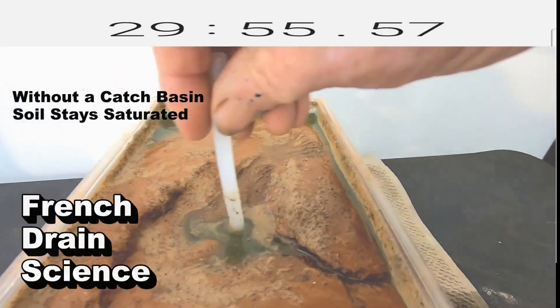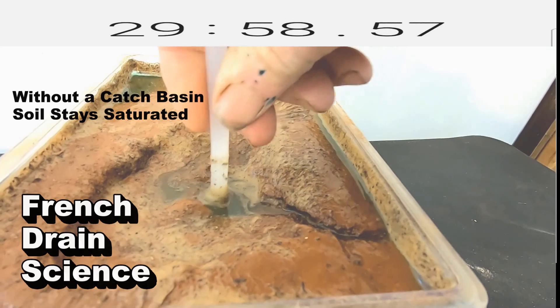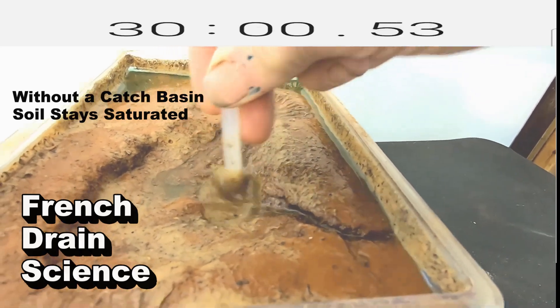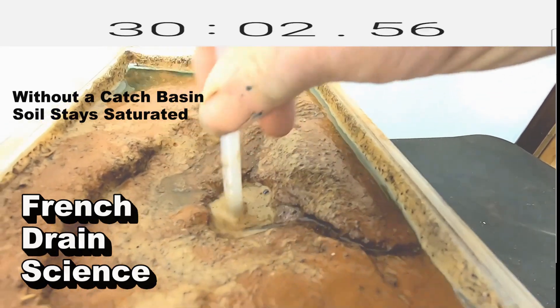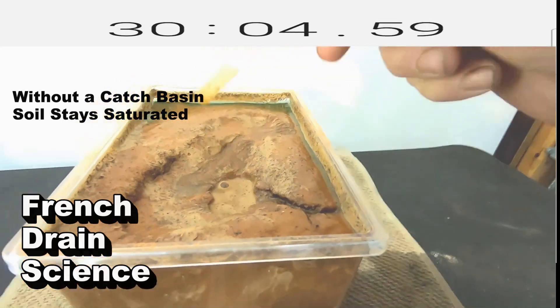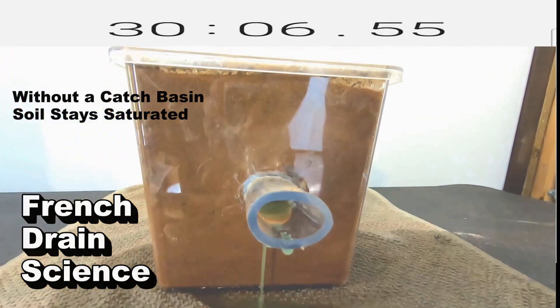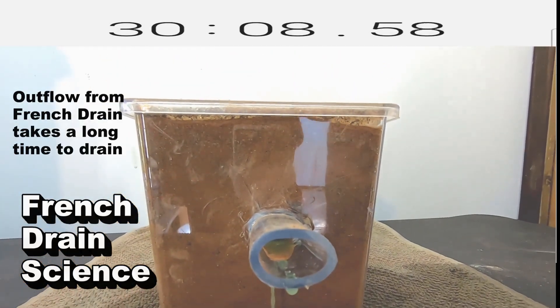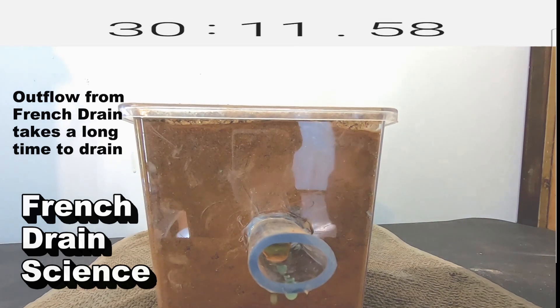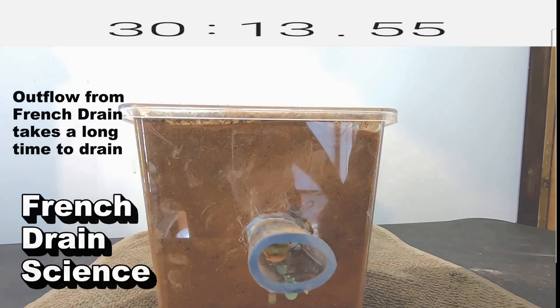Catch basins collect surface water. Without the catch basin, this would remain totally saturated for days. You can see if we put a catch basin on the surface and allowed it to drain into the French drain, this system will work great. French drain in clay soil wrapped in fabric, it takes a long time for it to drain. Yes, it does drain, but it's very, very slow.